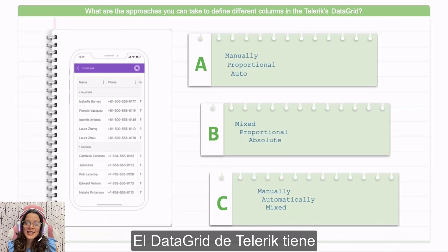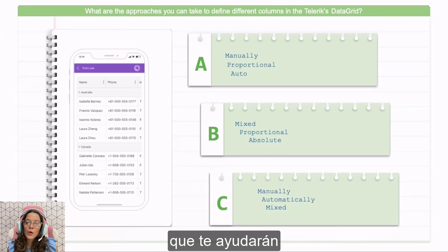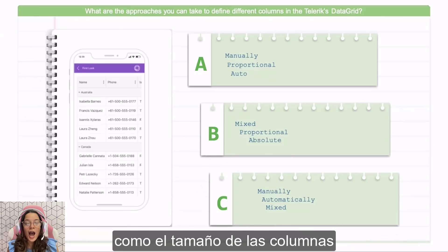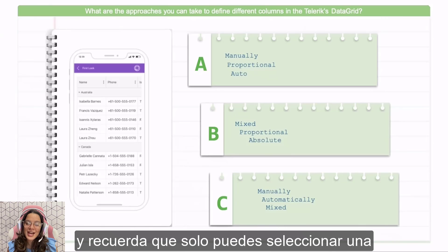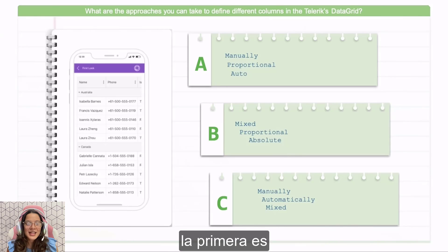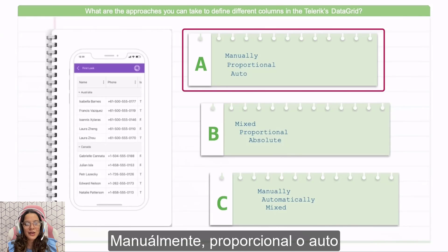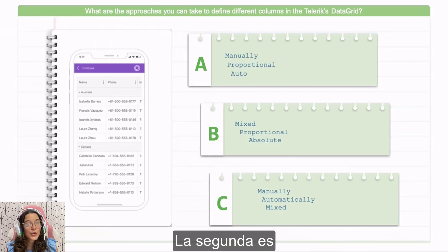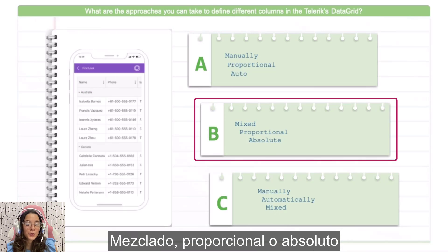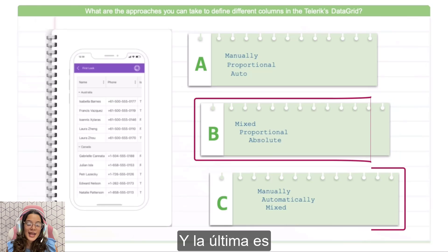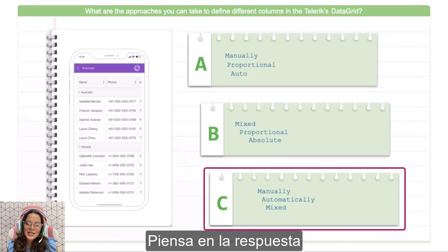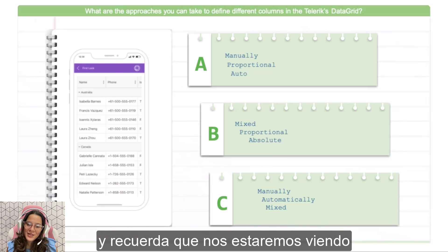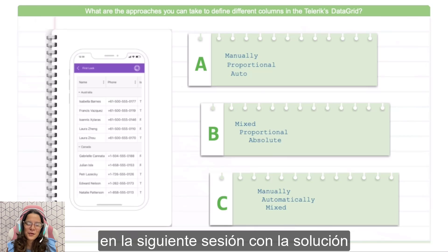The Telerik Data Grid has a set of defined values that will allow you to establish how the column size will be used. We have three different options, and remember that you just have to select one. The first option is: manually, proportional, or auto. The second one is: mixed, proportional, or absolute. And the last one is: manually, automatically, or mixed. Think about it, and remember that we will be seeing the solution in the next session.